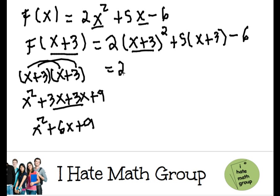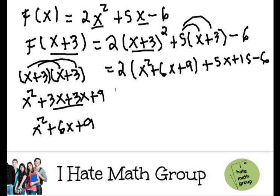So this is the same as 2, parenthesis, x squared plus 6x plus 9 plus 5 times x, which is just 5x, and 5 times 3, which is 15 minus 6.